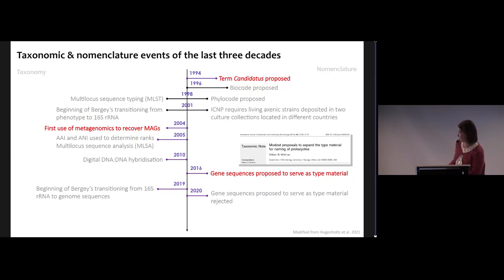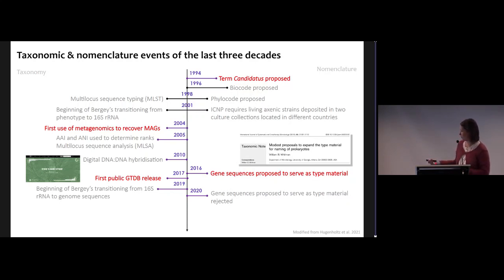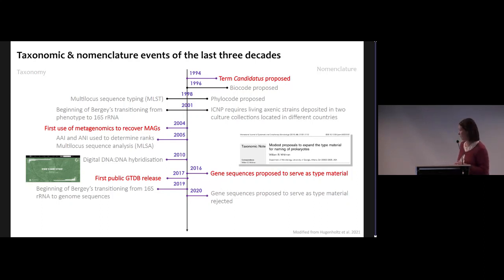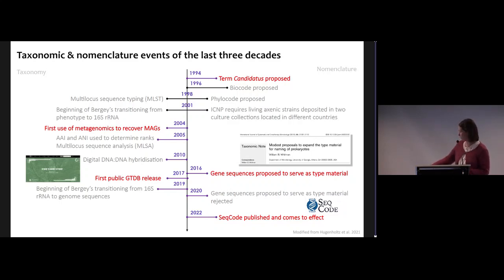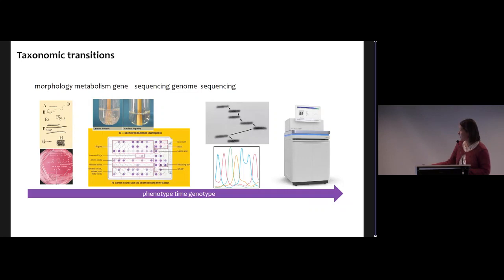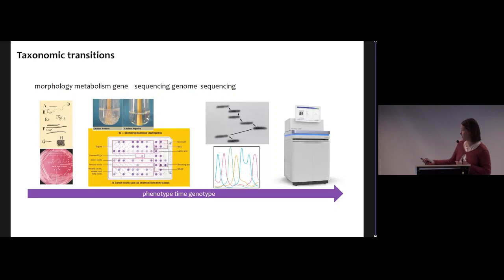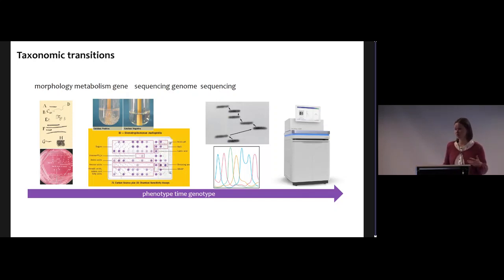Just before the idea of gene sequences as types was proposed, in 2017 we launched the GTDB taxonomy, where we started classifying cultured and uncultured organisms in a single unified framework. In 2022, the SeqCode was published. Taxonomy has really been a function of methodology in prokaryotic systematics — we had this transition from phenotypic towards genome-based taxonomy, but there was no solution for microbial ecologists and microbiologists worldwide.